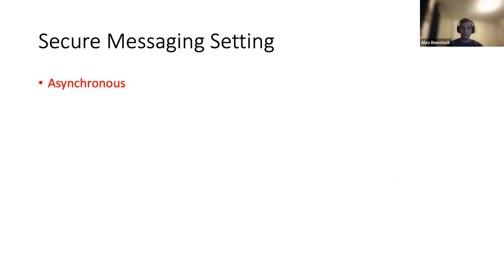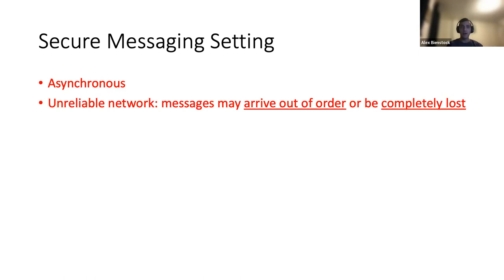So what is the setting for secure messaging? First of all, it's an asynchronous protocol, meaning that the two parties involved don't send in fixed rounds, but rather they can sort of send in an overlapping fashion. This is important to note because the off-the-record protocol was synchronous itself, and there were novel changes in Signal that made this protocol asynchronous. Also the protocol should work over an unreliable network where messages may arrive arbitrarily out of order or even be completely lost.